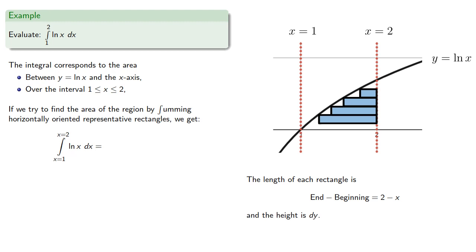So these rectangles have width 2 minus x, height dy, and we'll sum them up from x equals 1 to x equals 2.